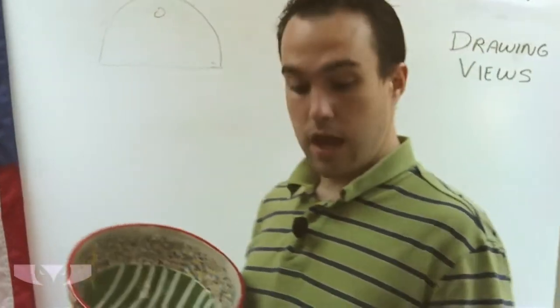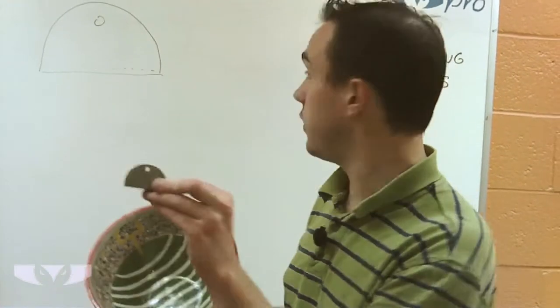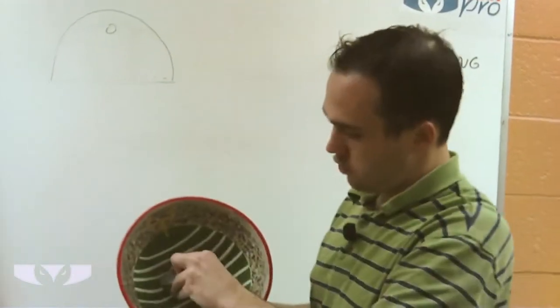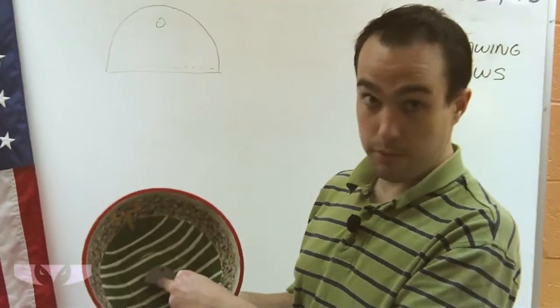What we'll do is we'll take the bowl and we put the part in there. We've got our front view like that, so we put it right there in the bottom.